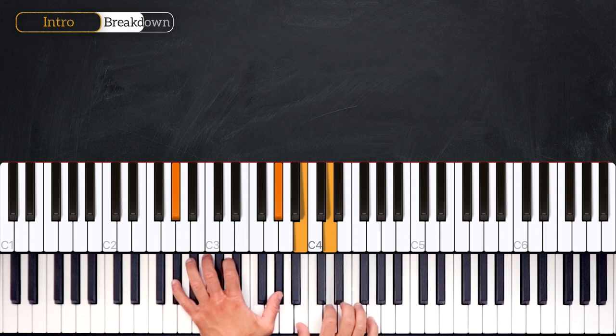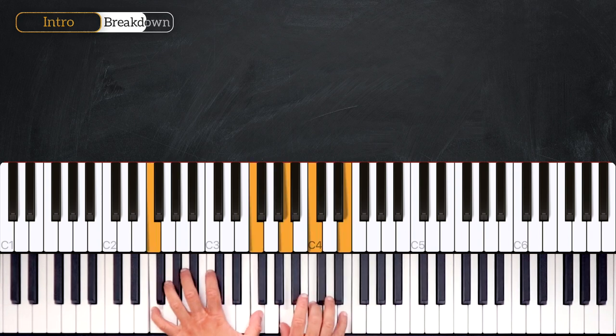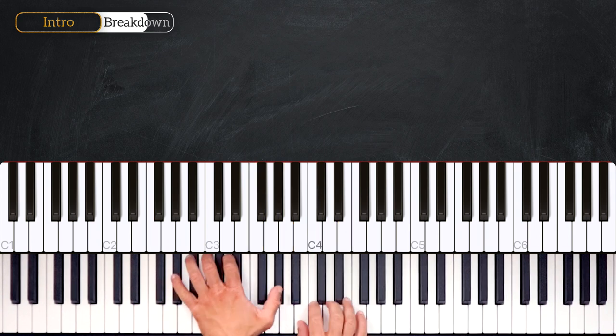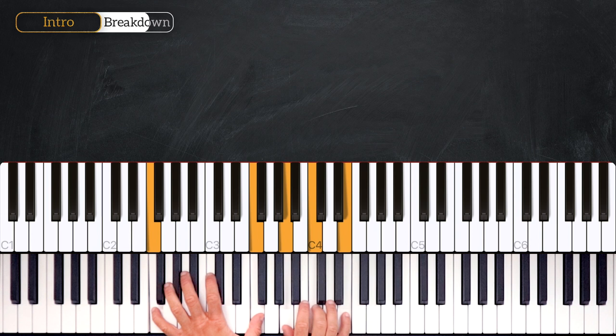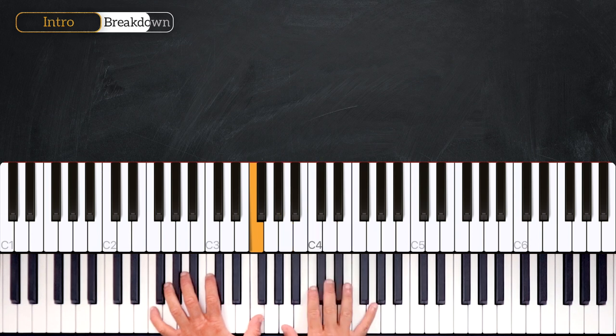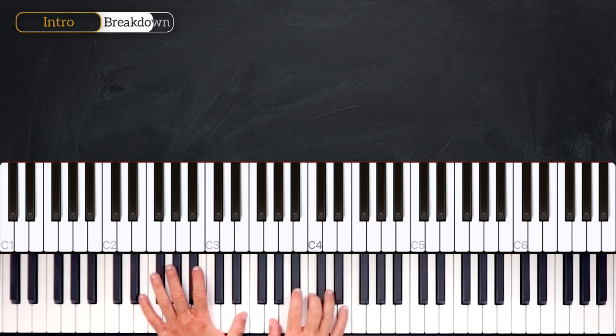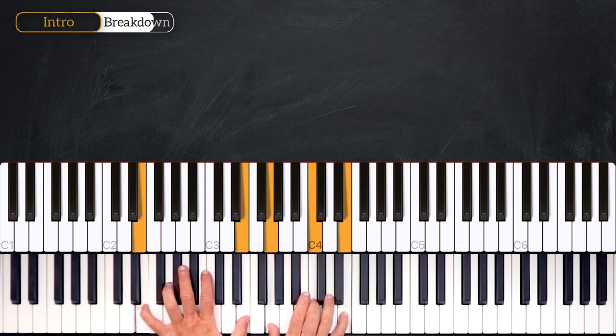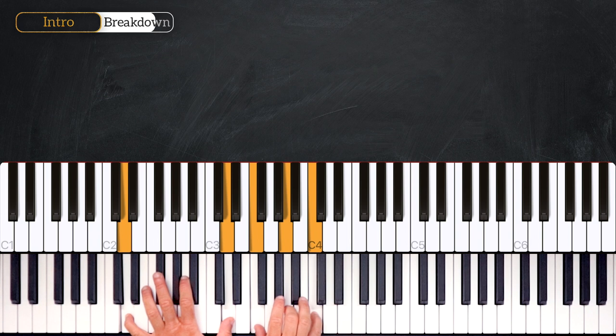Then from here we'll play C, D into F major 7. Then we'll add a top G on the right hand, which gives us an F major 9 chord. Then we'll play the C over E chord back to the D minor 7, and that gives us the first pattern of this introduction.